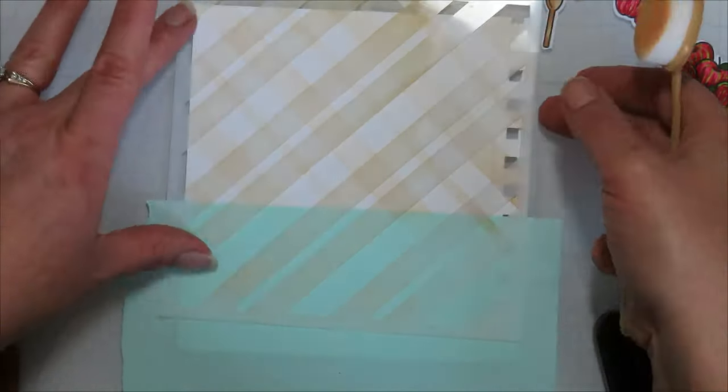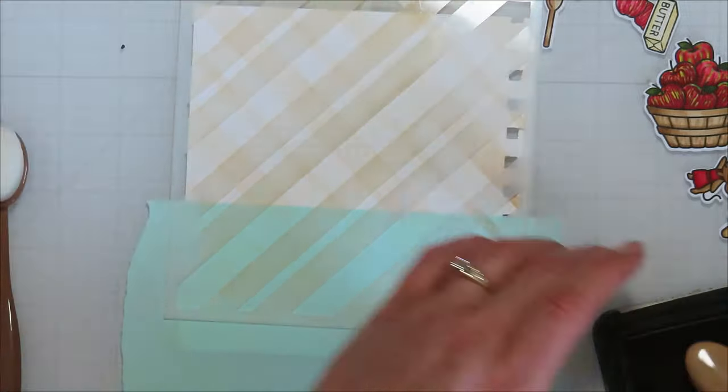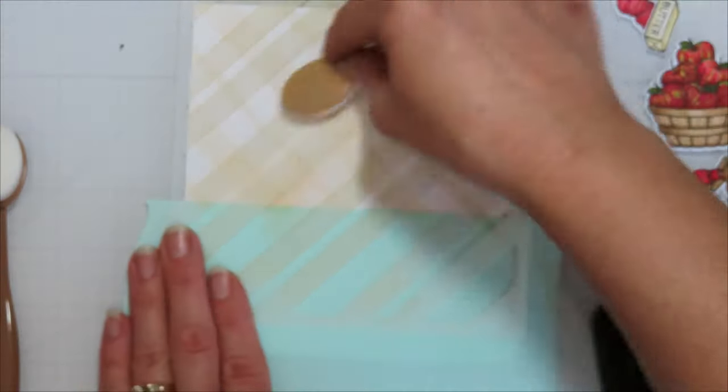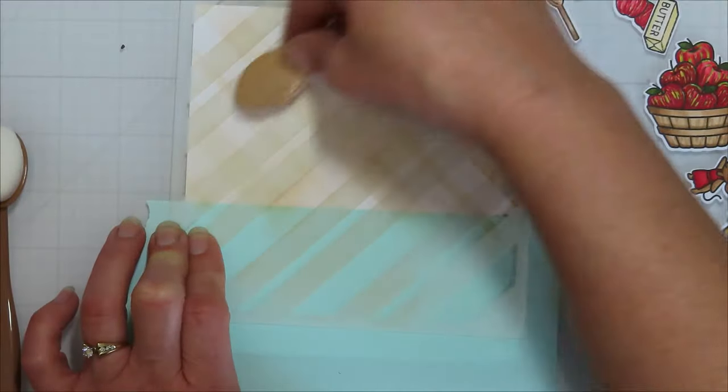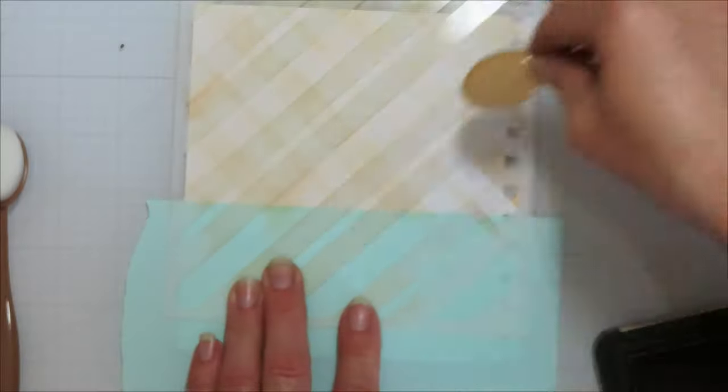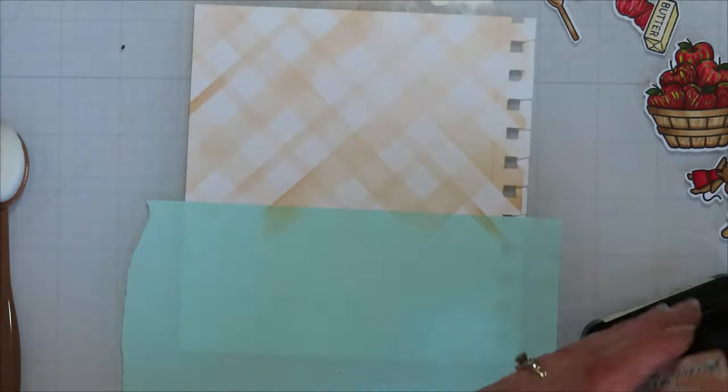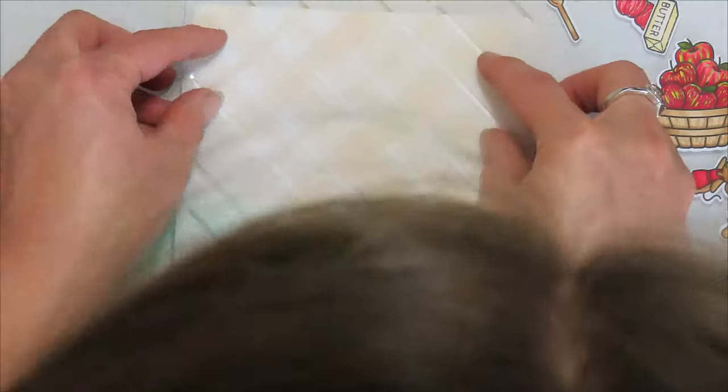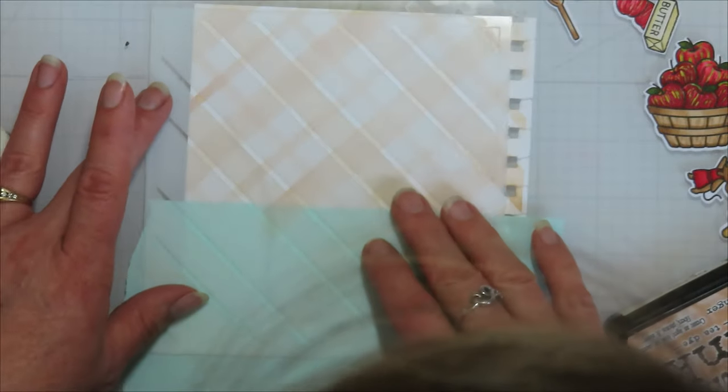So for my background, I couldn't decide on a paper, so I thought, well, let's make one. I'm bringing in the Simply Plaid Builder set from Lawn Fawn. It's two stencils, the thick one and then the thin skinny one. So I'm starting with that thick one, and then I'm going to move over to the skinny one.